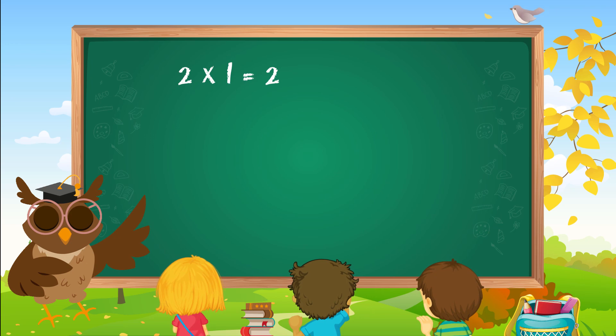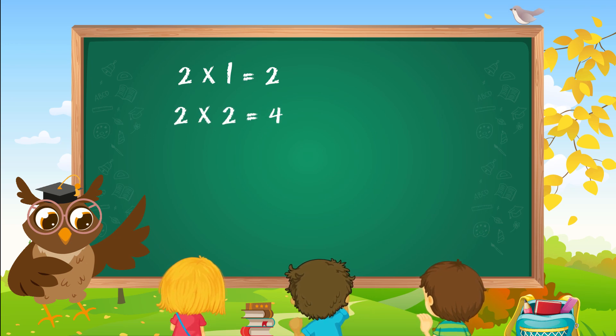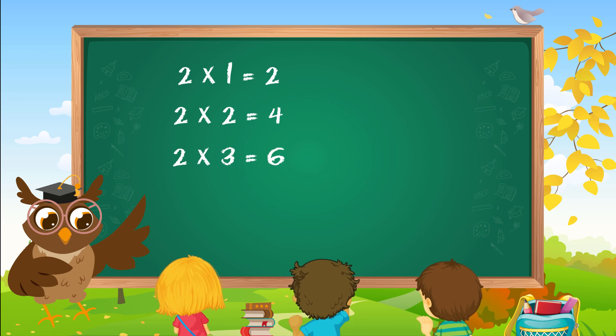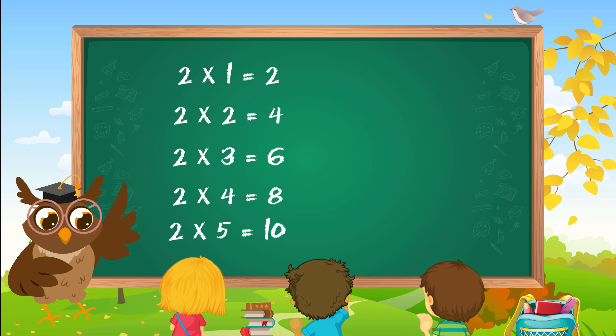Two ones are two. Two twos are four. Two threes are six. Two fours are eight. Two fives are ten.